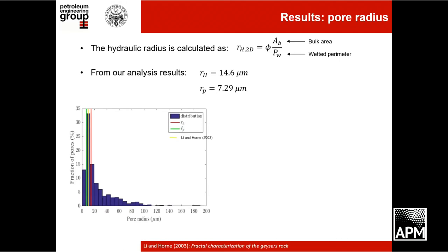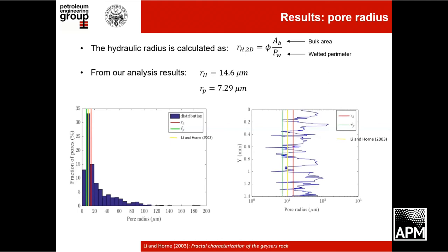From the pore radius distribution, it is also possible to know the smallest pore size. The variation of the pore radius along a single path is also represented, and this information is important because from this graph we can see if there are heterogeneities along the path.